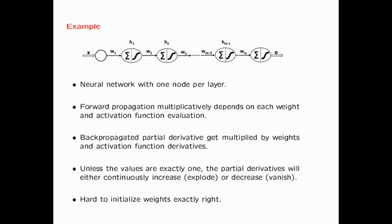Here I have given an example of a neural network with exactly one node per layer. Obviously, most neural networks have more than one node per layer, but looking at one node per layer is the best way of understanding why the vanishing and exploding gradient problems happen. In each case, you have a single scalar weight value between two layers and an activation function. The forward propagation multiplicatively depends on each weight and activation function evaluation.